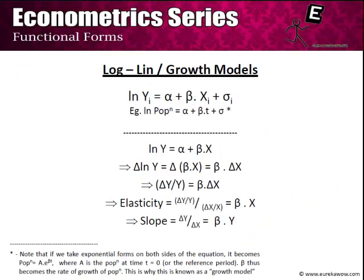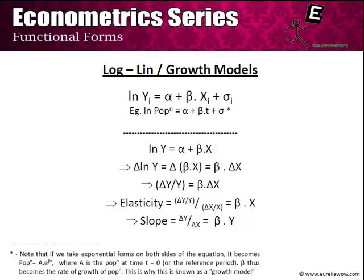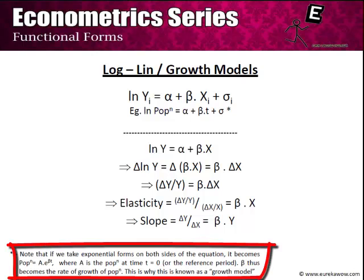Another important functional form is the log-lin or growth model. Here we take the log of the dependent variable and regress it on the linear form of x: log(yi) = α + β·xi + εi. A typical demographic example is population versus time — since we expect population to grow at a constant percentage per year, log(population) = α + β·t + ε, meaning population grows at an exponential rate with respect to t, growing by β percent each year.